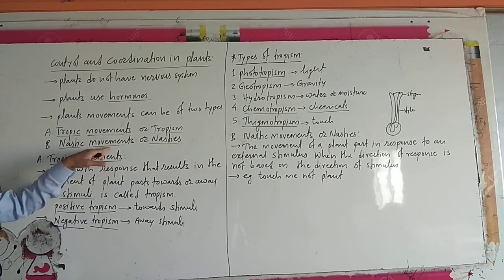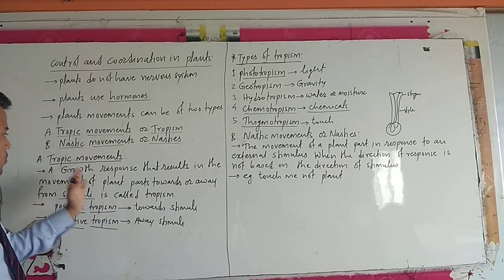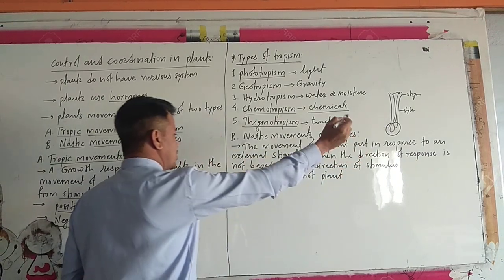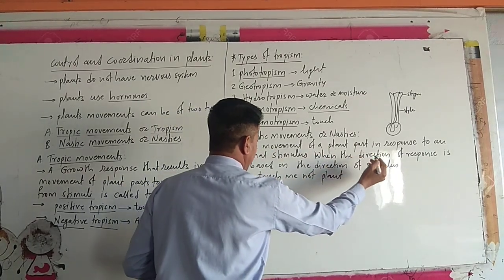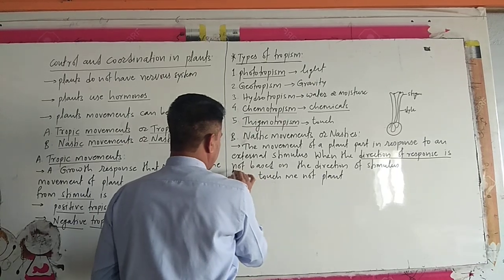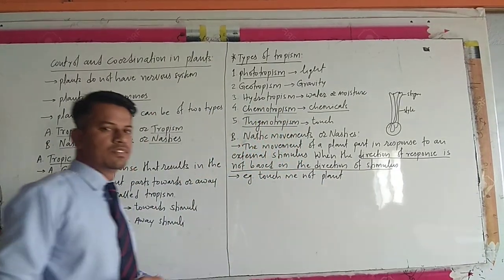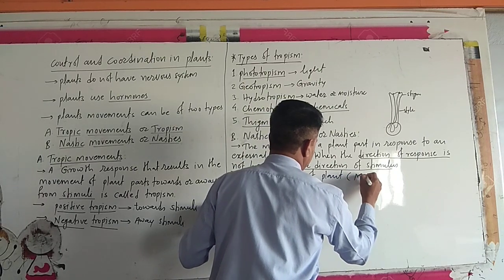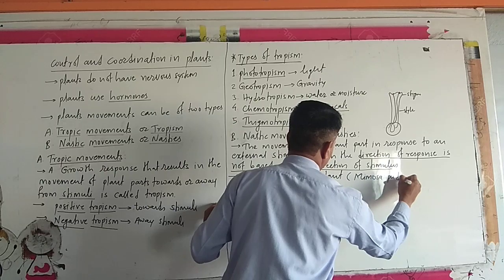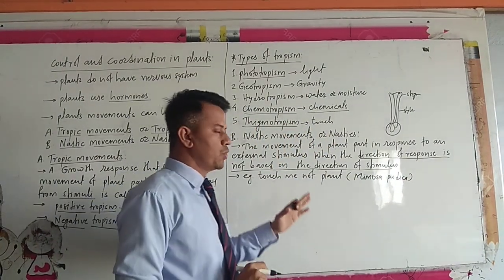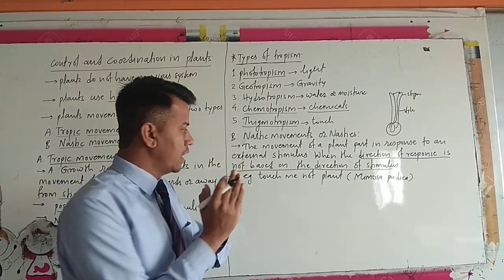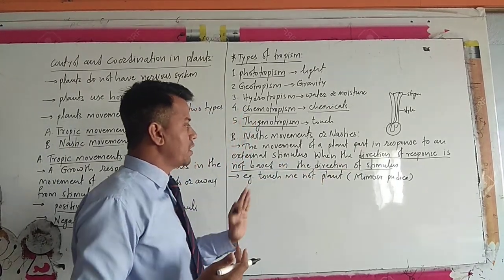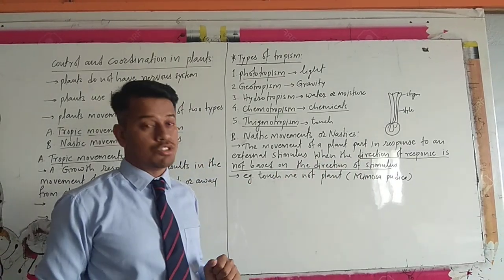The second type is nastic movements or nasties. Nastic movements are the movement of plant parts in response to an external stimulus, when the direction of the response is not based on the direction of the stimulus. The best example is the touch-me-not plant, also called Mimosa pudica. When we touch the leaves of Mimosa pudica, it will close, and this movement is not based on the direction of the stimulus.